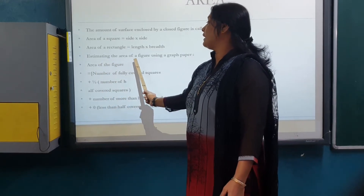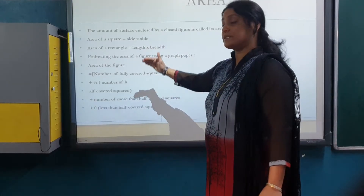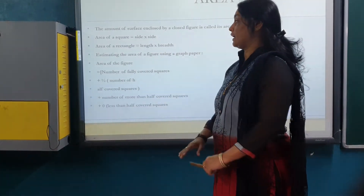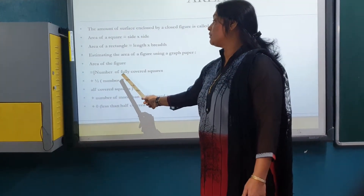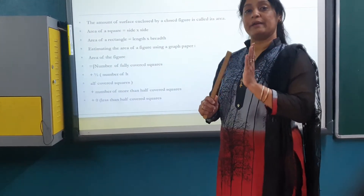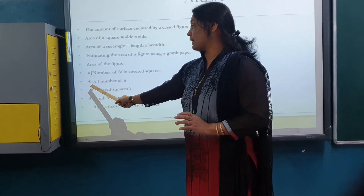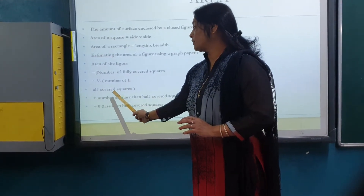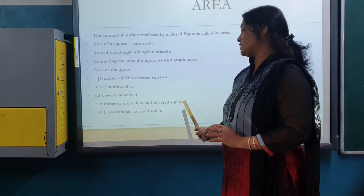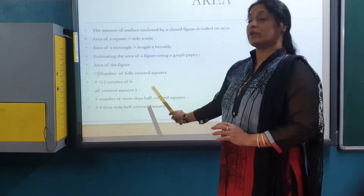Now, estimating the area of a figure using graph paper. Area of a figure equals the number of fully covered squares, plus half of the number of half-covered squares, plus half of the more than half covered squares, and zero for less than half covered squares. This type of sum is there in exercise 10.1 and will be more clear when we do the sums.